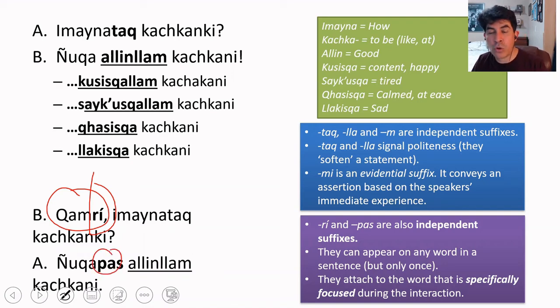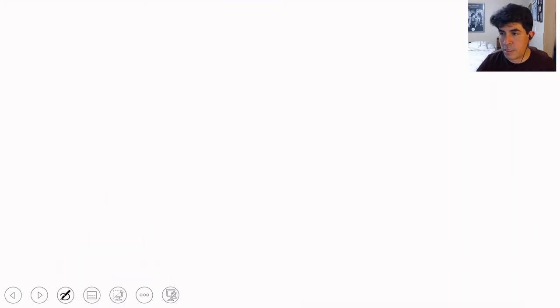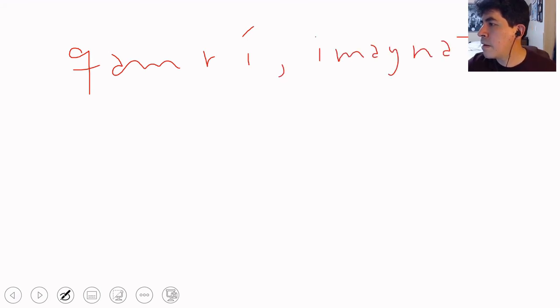So in Quechua, it makes sense to say it this way. You are not going to hear that when somebody says camri, and let me use this here. If somebody says camri, imaynatach, the answer is kashanki.